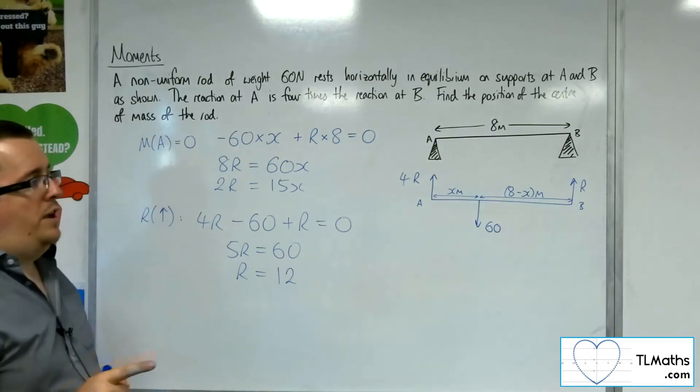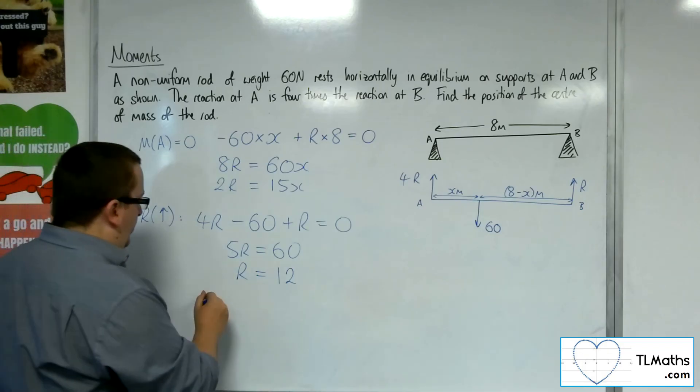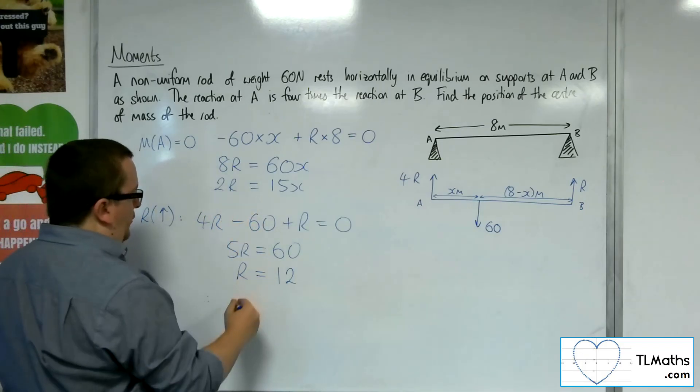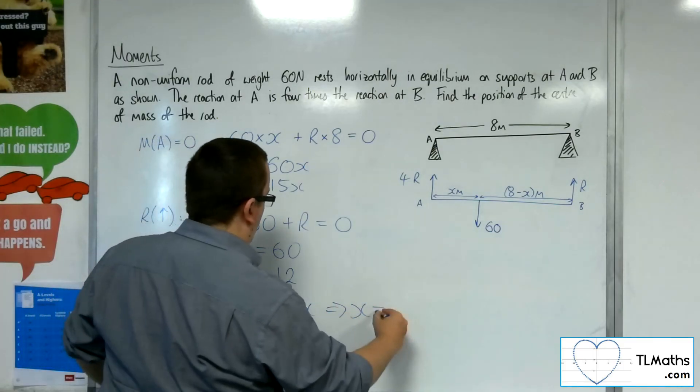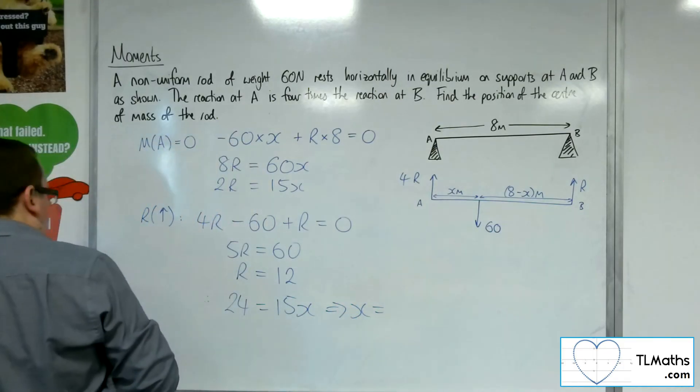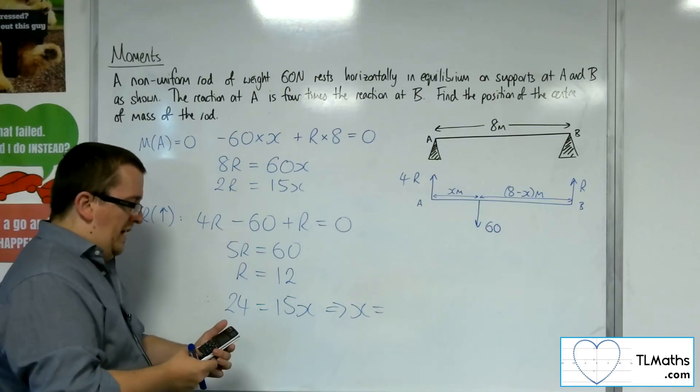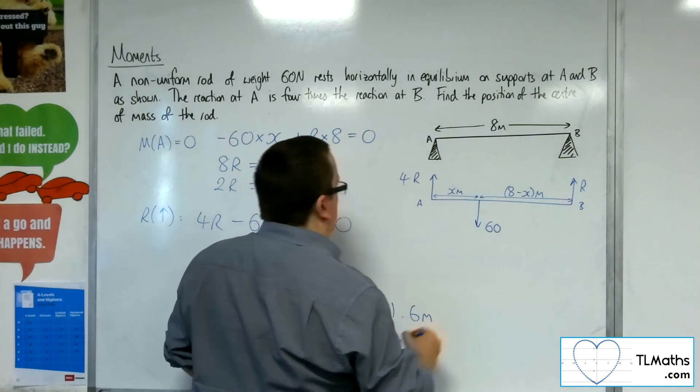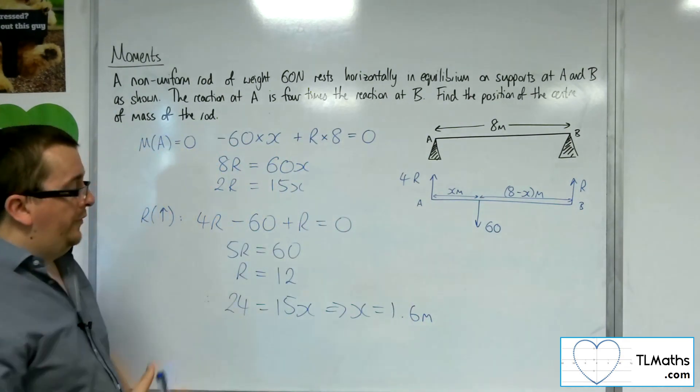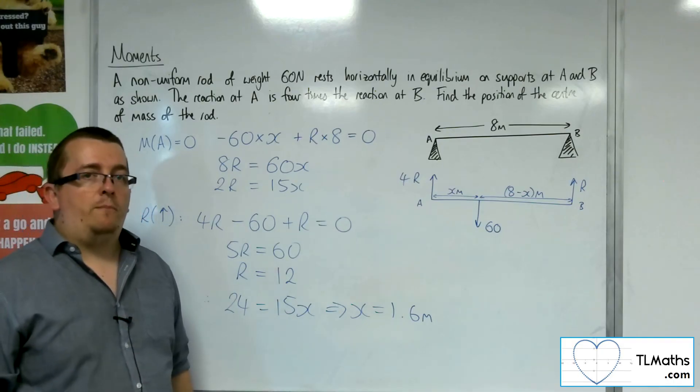So I now know R is 12 newtons. So we've got two lots of R, so 24 has got to be equal to 15x. So x is 24 divided by 15, which is 8 fifths, which is 1.6. So the centre of mass is 1.6 metres away from A.